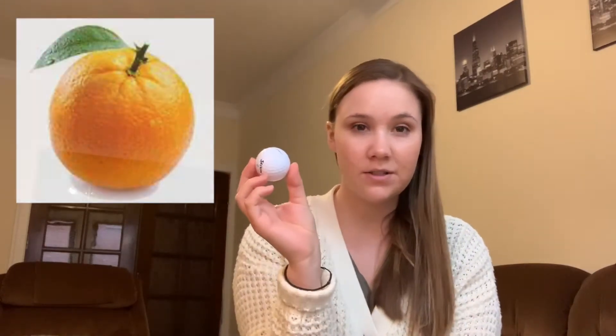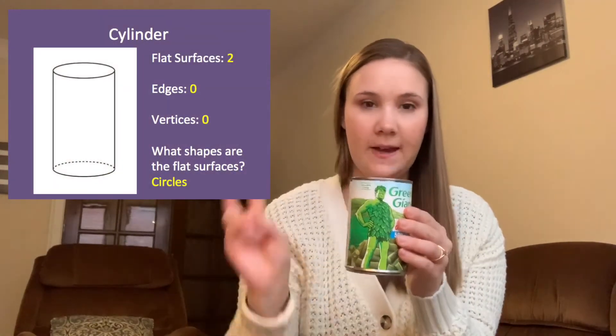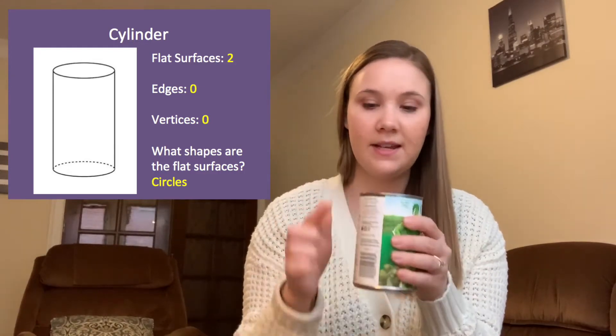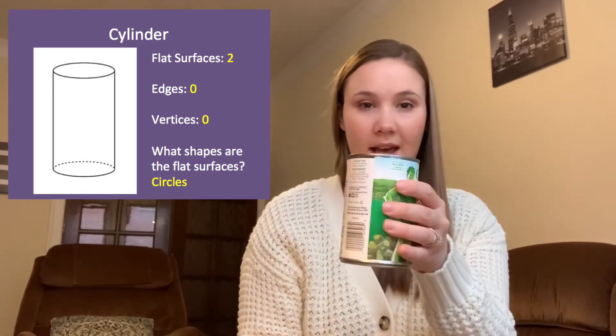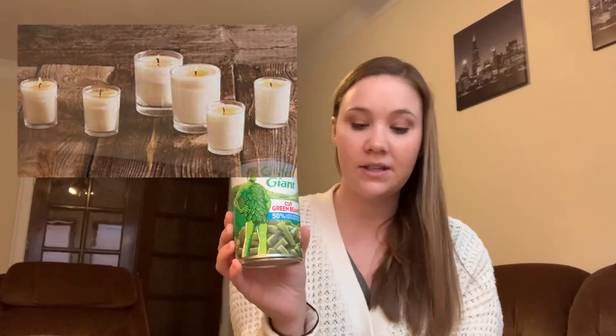Let's look at a cylinder. Does a cylinder have any flat surfaces? Let's count — it has one on the top and one on the bottom, so it has two flat surfaces. A cylinder doesn't have any edges and it doesn't have any vertices. Real-life examples of cylinders include a candle and a toilet paper roll.